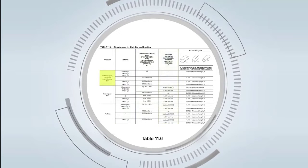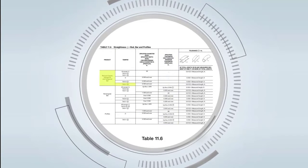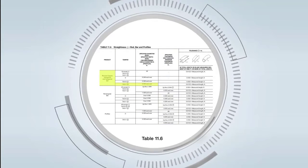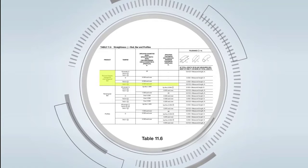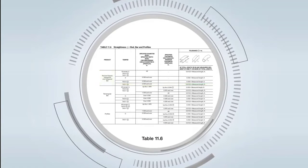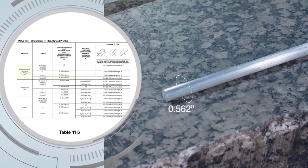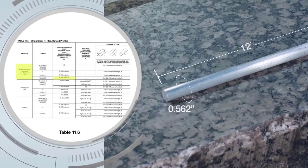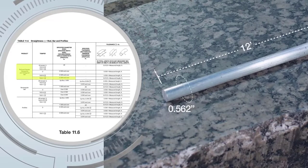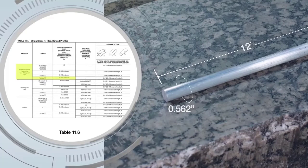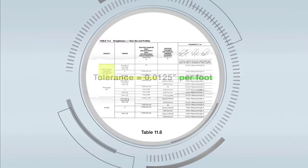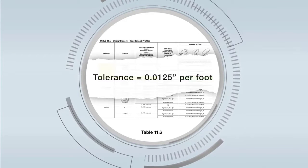For a given extrusion, its specifications are matched under each category until you are led across the table to the appropriate tolerance in the far right column. For this 0.562 inch diameter extruded rod that is 12 feet long in 6061-T6511 alloy temper, the allowable straightness tolerance is found to be 12.5 thousandths per foot.